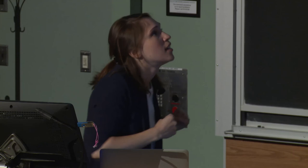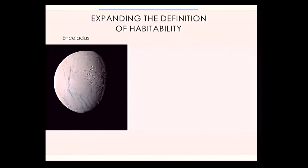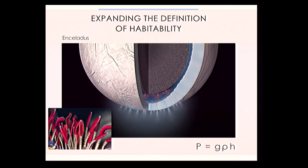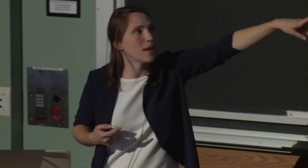We have a solar-system-centric perspective on what compositions we need for a habitable planet, but we should expand our definitions. Enceladus, for example, has a global ocean and geothermal vents at the base — a very similar environment to the hydrothermal vents at the bottom of our ocean, where we have tube worms. Life may not look like you and me, but it might look like tube worms — which would still be amazing to find. You can even calculate the pressure at the base of Enceladus' ocean using hydrostatic equilibrium and it comes out to be the same as the base of Earth's ocean.